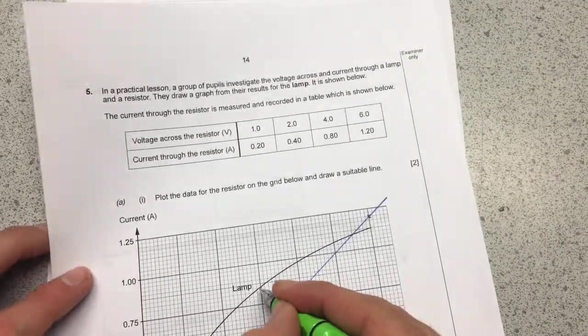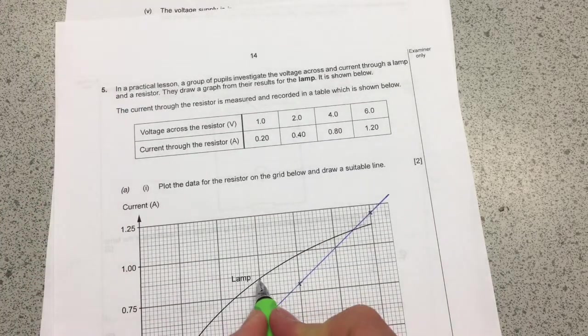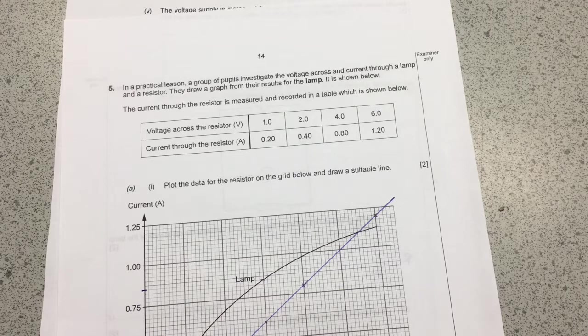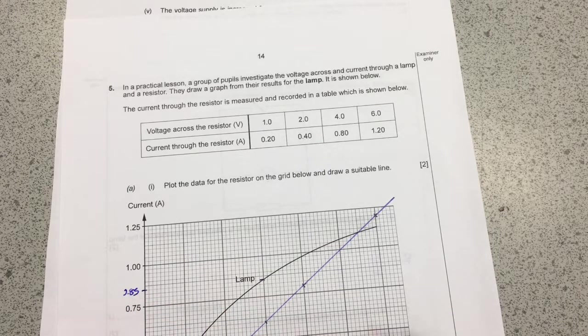But we need the graph to tell us what the current will be at three volts. So the lamp at three volts, I go up and then I go across and that's here and that's going to be 0.85.